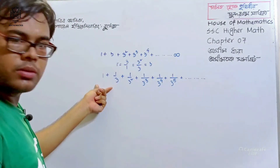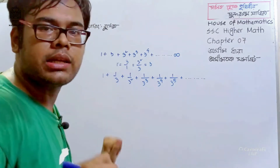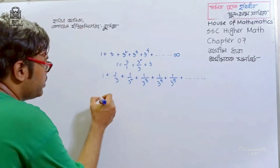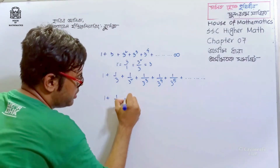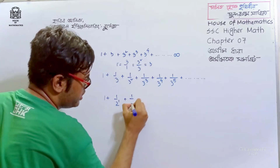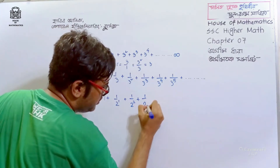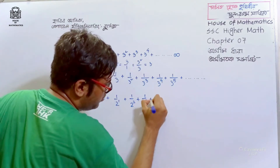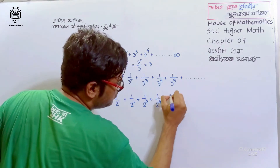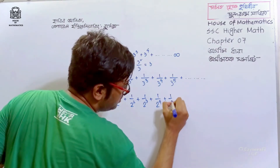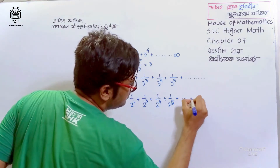Now let's look at another series: 1 plus 1 by 2 to the power 1, plus 1 by 2 squared, plus 1 by 2 cubed, plus 1 by 2 to the power 4, plus 1 by 2 to the power 5, plus dot dot dot.